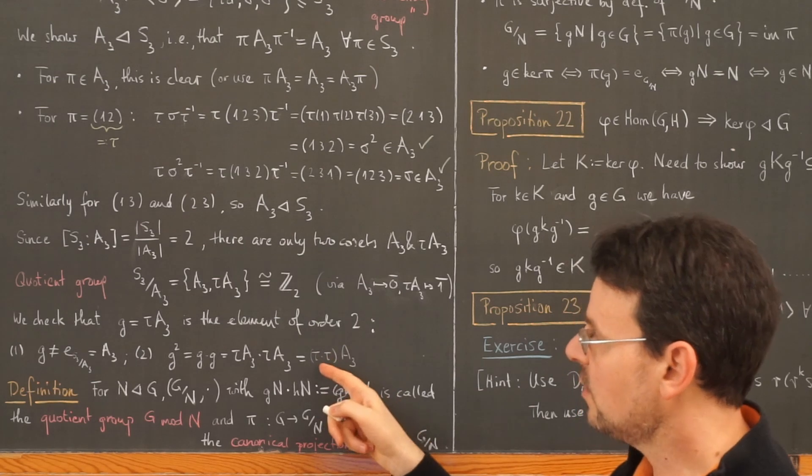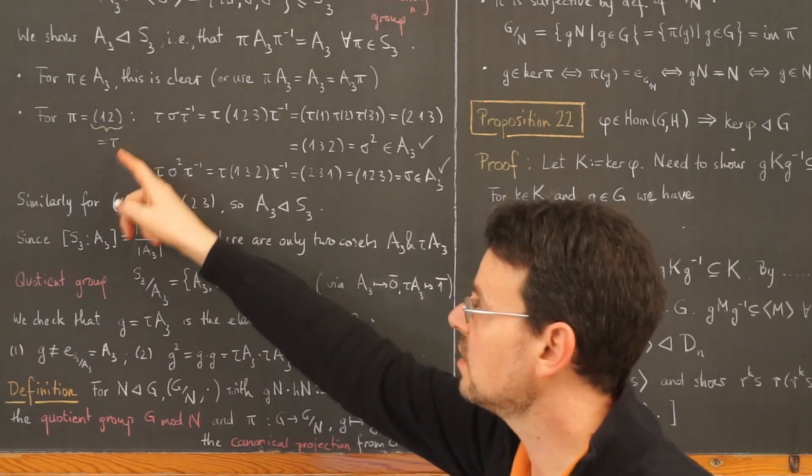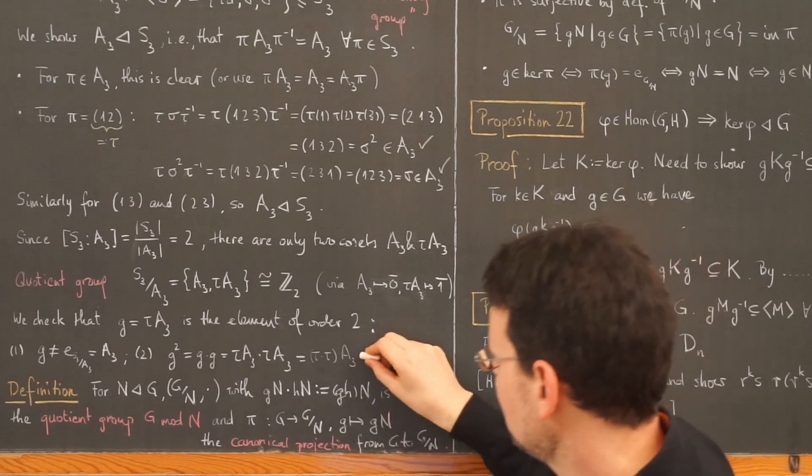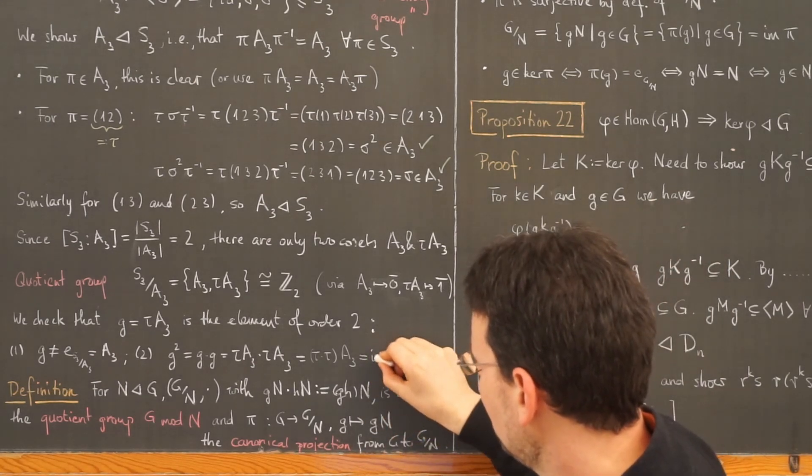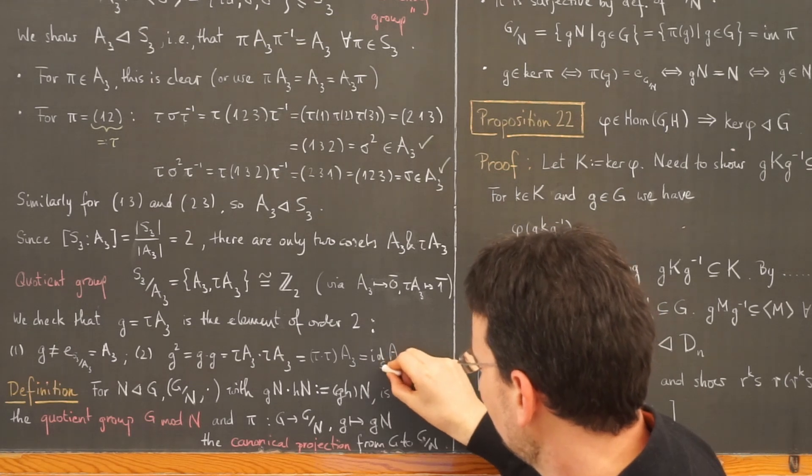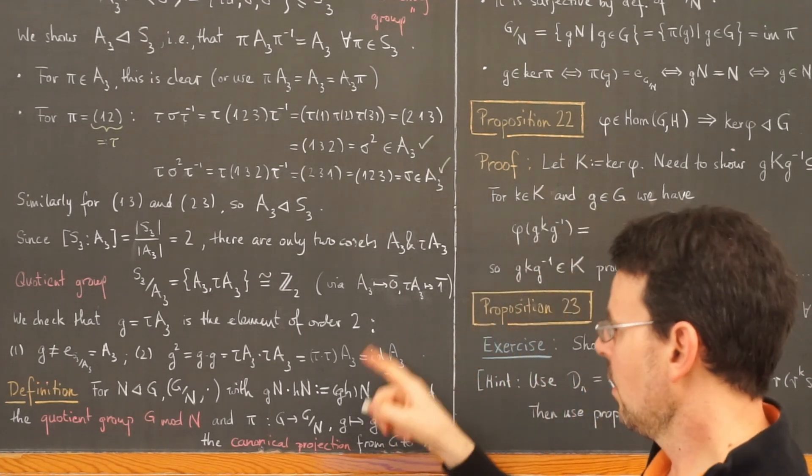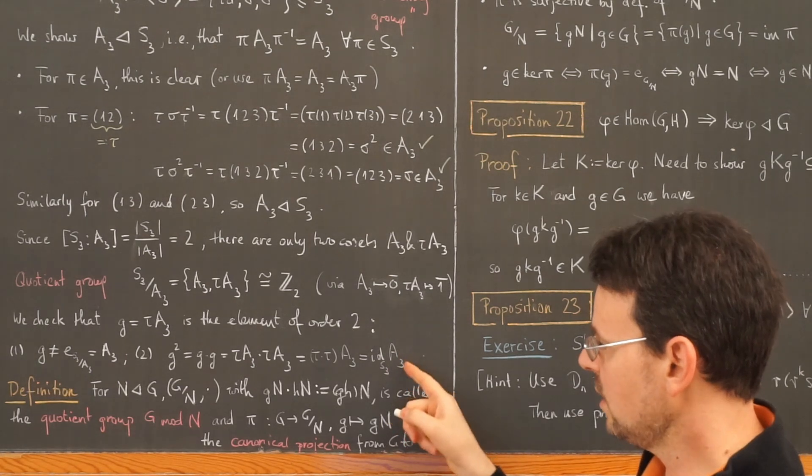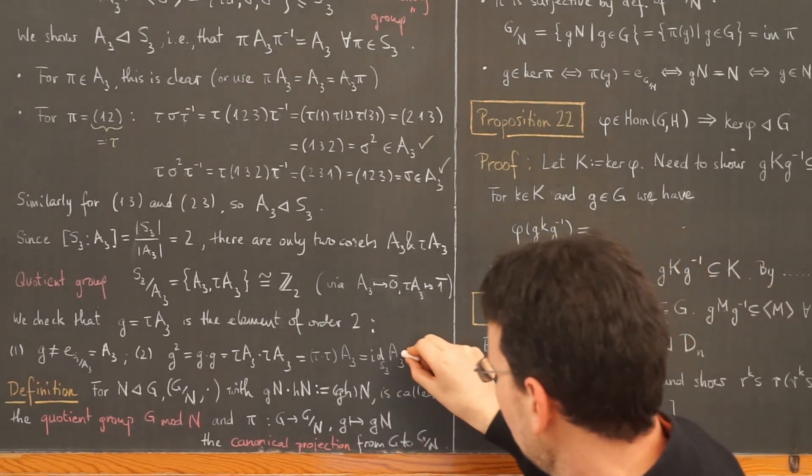But this here, tau squared, clearly is the identity because tau is a transposition, so I end up with the identity of S3 multiplied with A3, so the left coset of the identity with respect to A3.